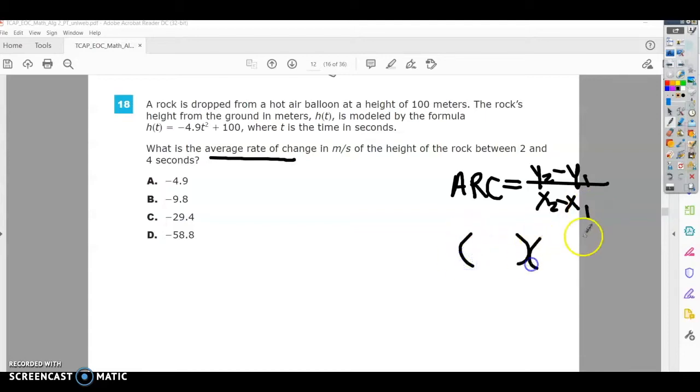So it says that we want to have an average rate of change between 2 and 4 seconds. Since 2 and 4 seconds is our time, that's going to be our x value. Now we have to find the y value in order to find the average rate of change. So before we do anything else, we have to find the y values for 2 and for 4, so we're going to plug those in. So h of t is the same thing as y.